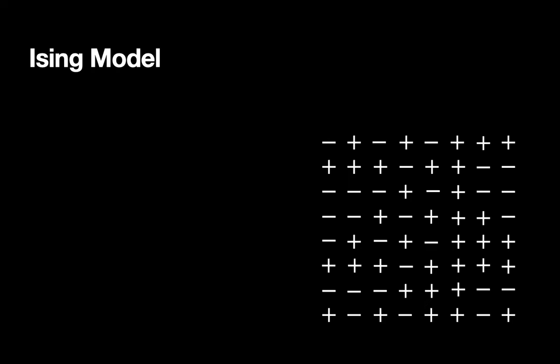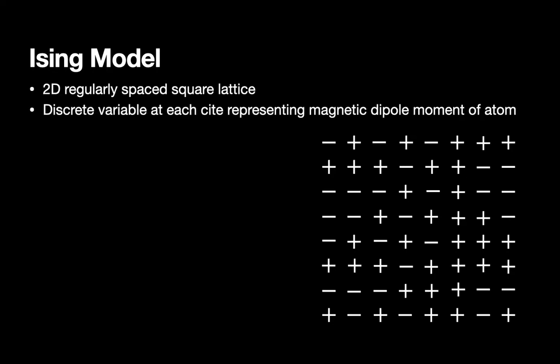A great system to pick is the Ising model. This system consists of a 2D lattice of discrete variables, where each is typically taken to represent the magnetic dipole moment of an atom. Each site has a spin value of plus 1 or minus 1.